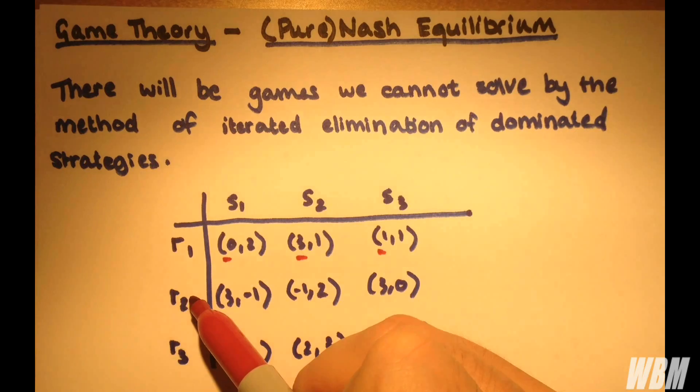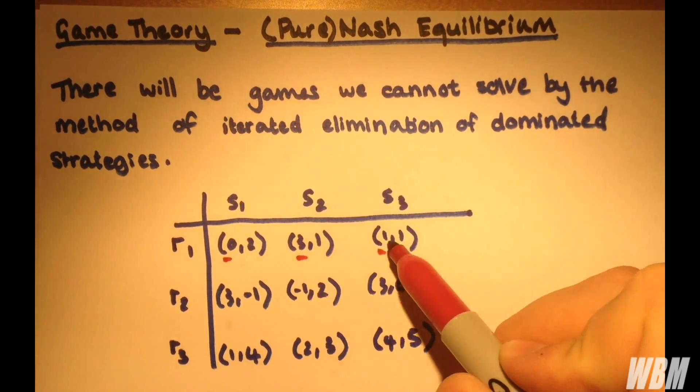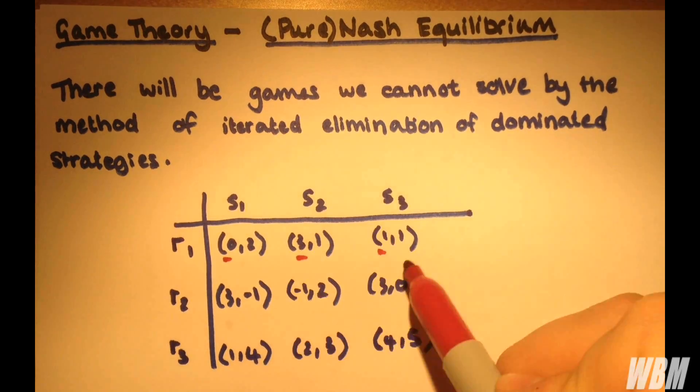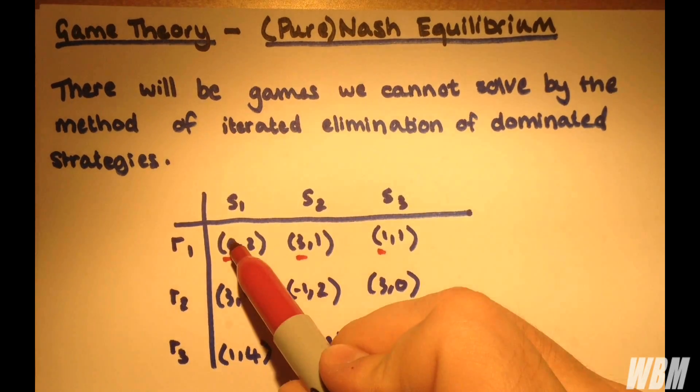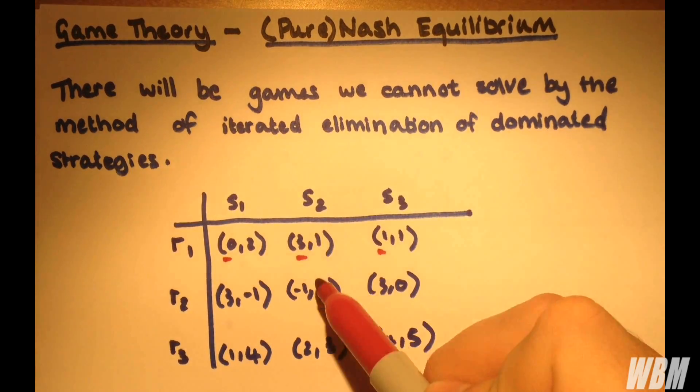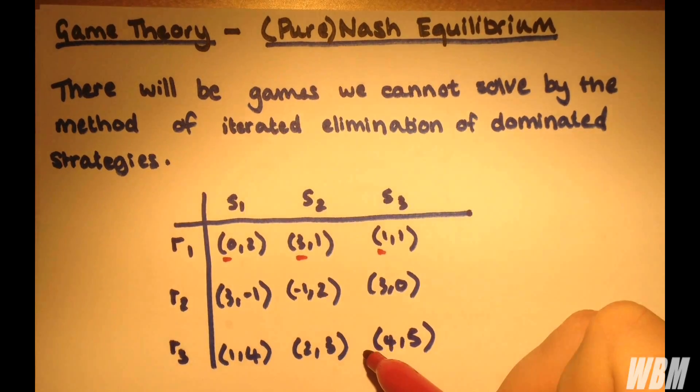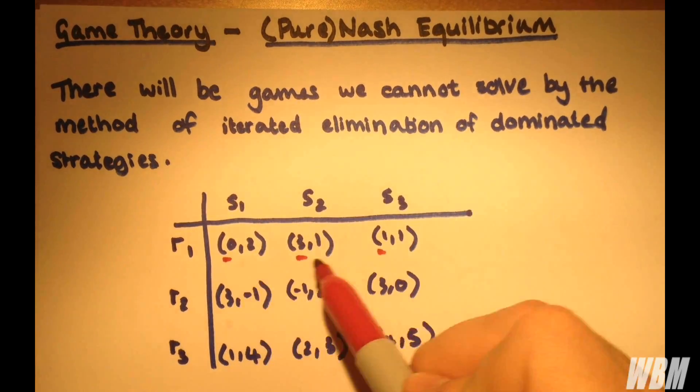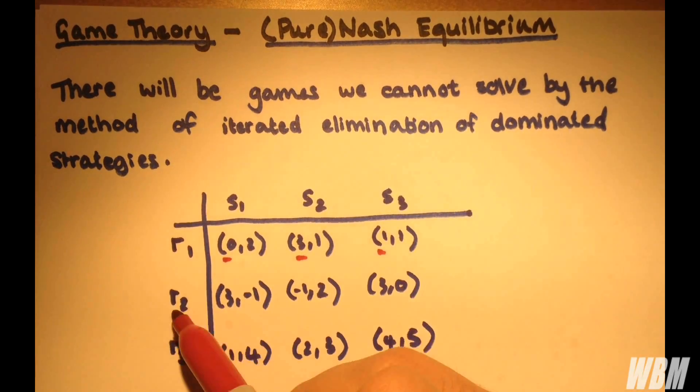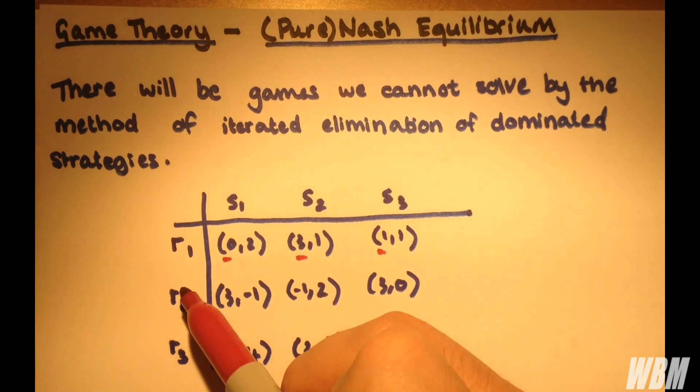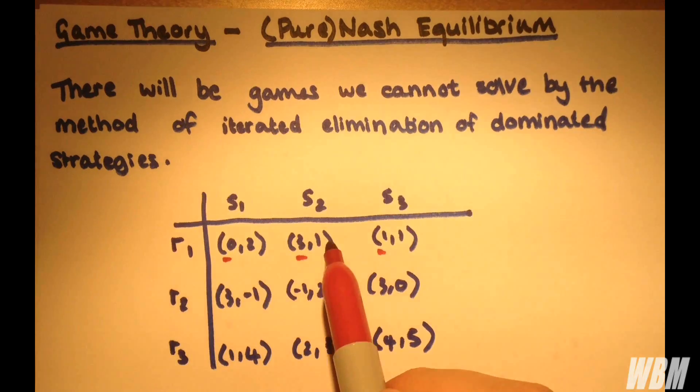Let's compare this to R2. So, 0 is less than 3, but 3 is greater than minus 1, and 1 is less than 3. So, there's no dominance between these two. Let's compare it with R3 here. 0 is less than 1, but then 3 is more than 2, and 1 is less than 4. So, you can't have two values being less than a value and another one being greater than. There's no dominance here. And the same goes for all R1, 2, and 3 relative to each other.